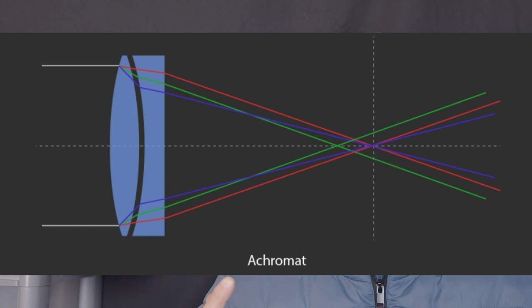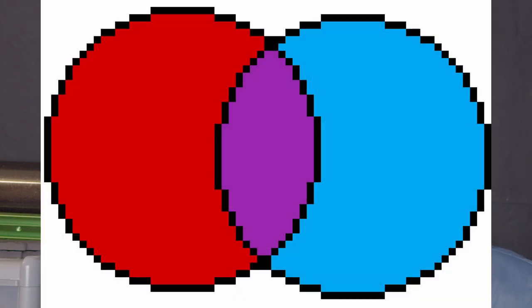And our eyes are sensitive to the green, so we tend to focus for green, which puts the red and the blue wavelengths slightly out. And this can cause a halo around bright objects. And because red and blue makes purple, the halo tends to be purple.